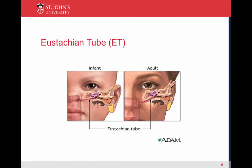In adults, the eustachian tube is on a vertical angle. In children, it is on a more horizontal angle.